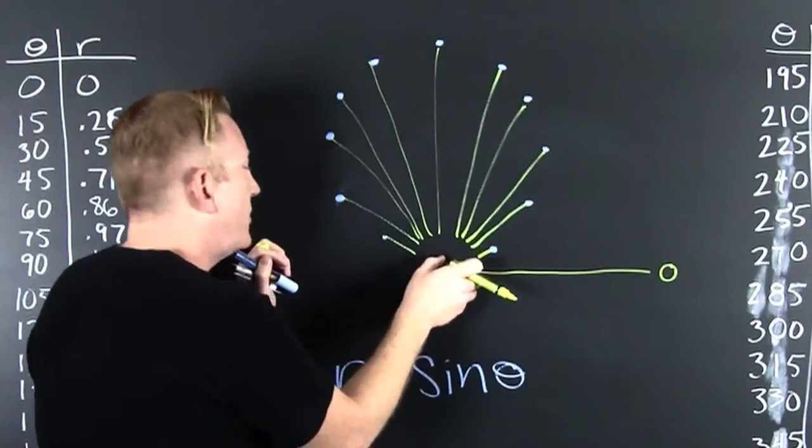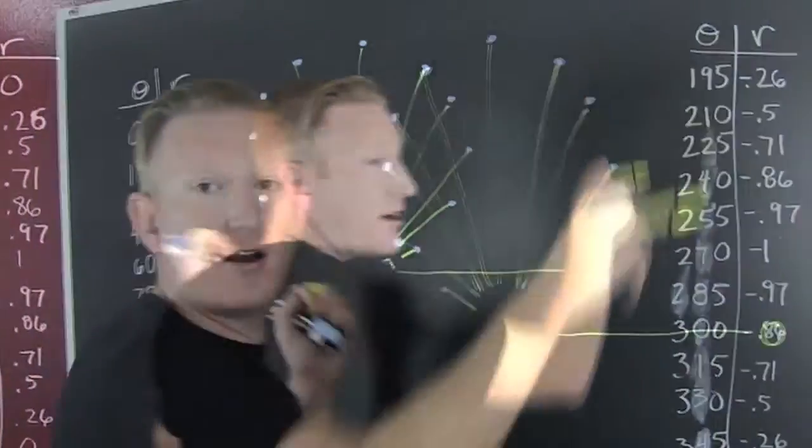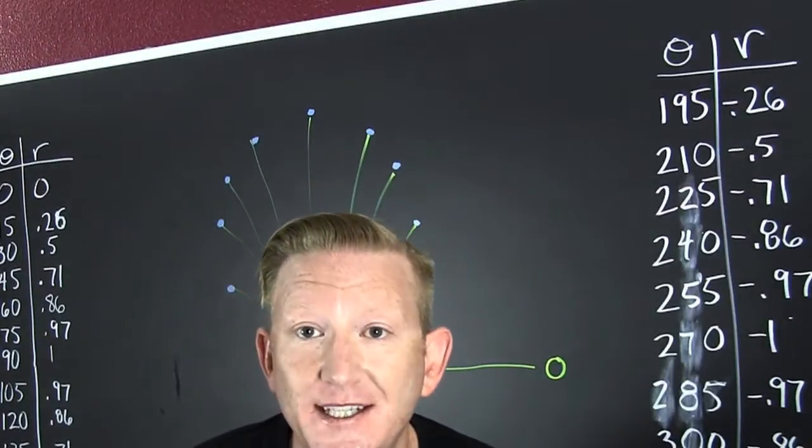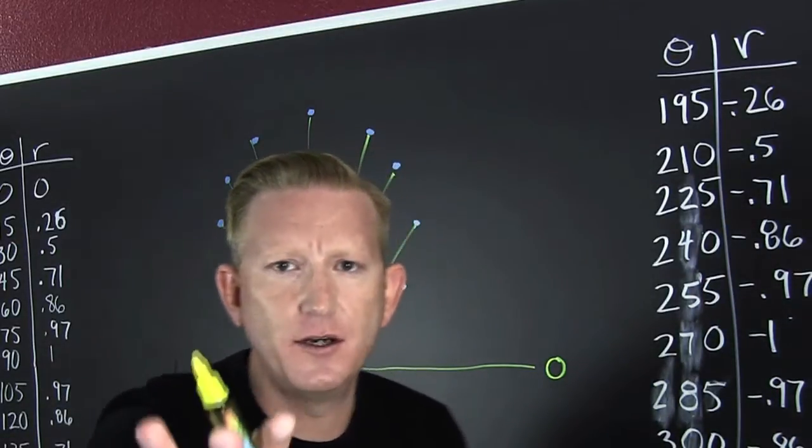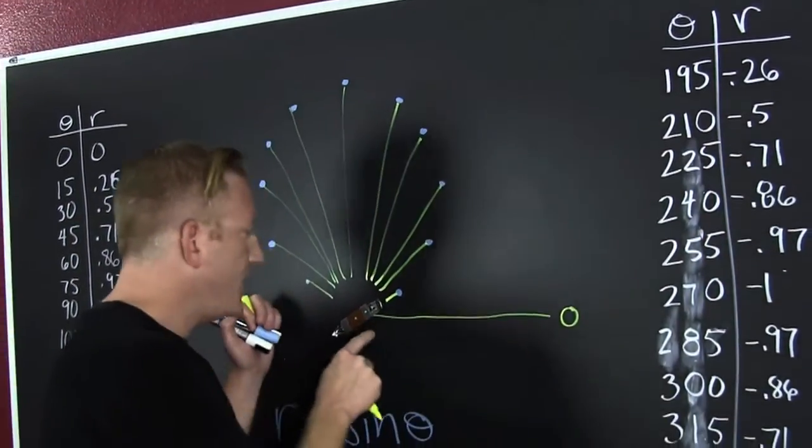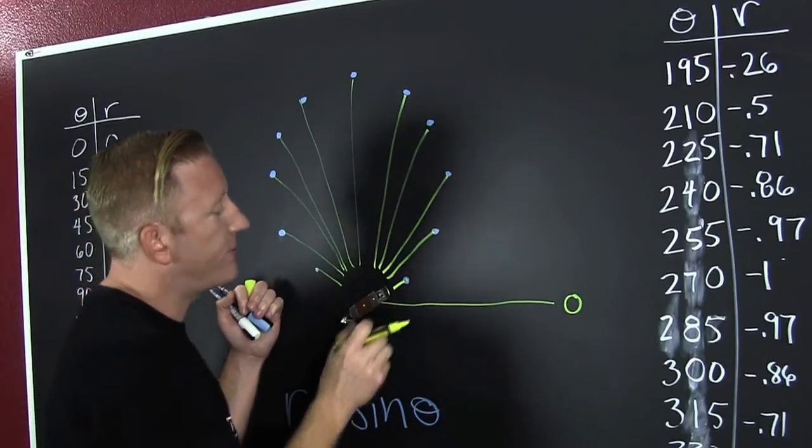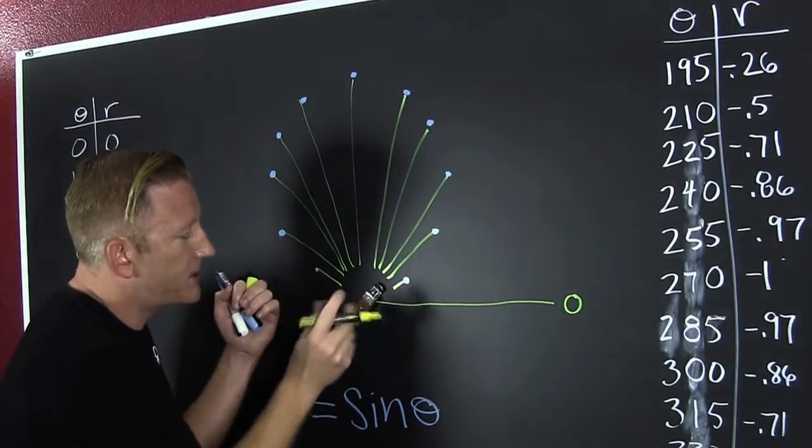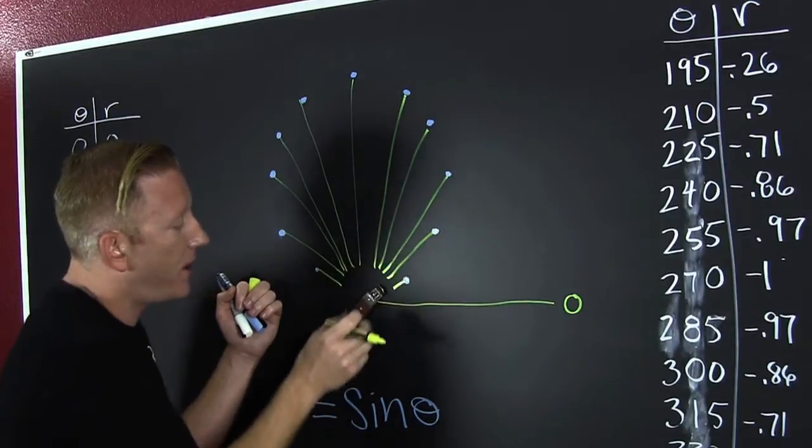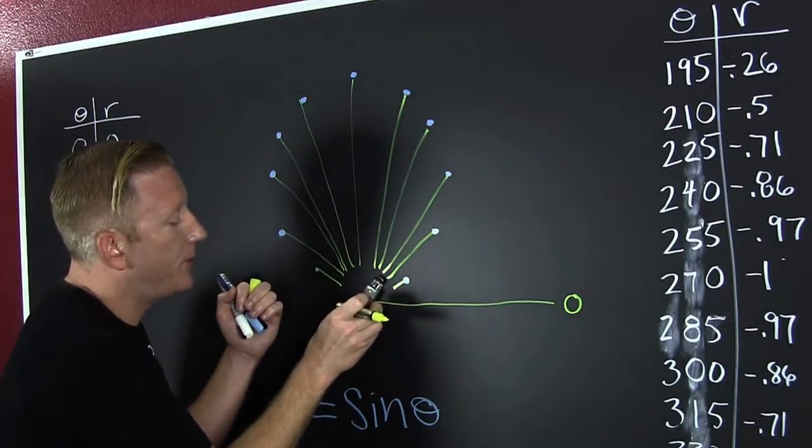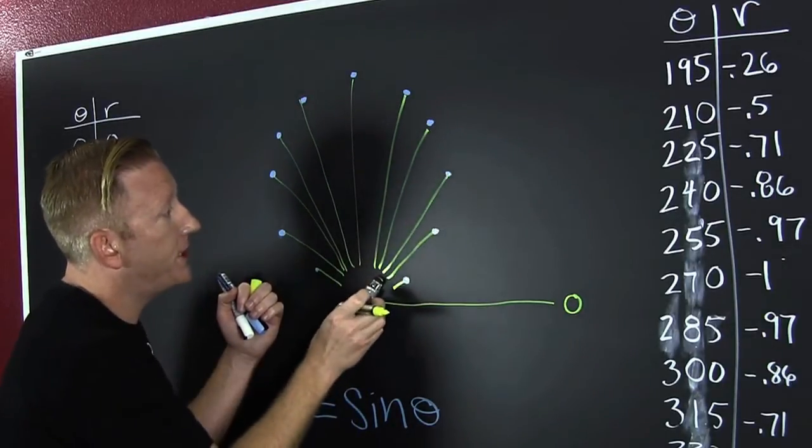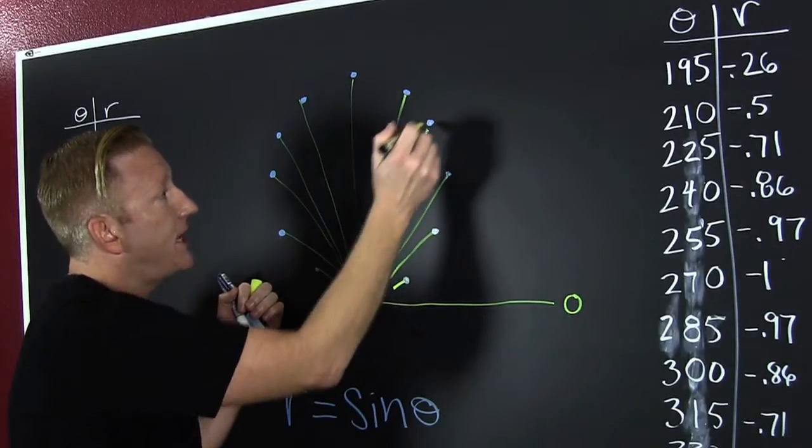Now what happens after 180 degrees? We see that our R is turning negative. Oh, don't be negative on this video. It's negative. So we're pointed in that direction, but we're going out that far. We're pointing in that direction, but we're going out that far, repeating this pattern in the opposite direction.